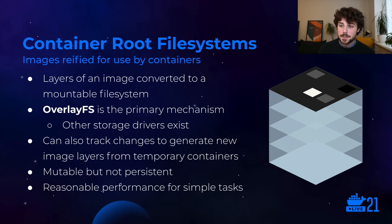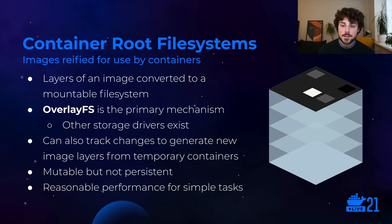Container root file systems are layered images that have been converted into a real, mountable, kernel-level file system. There are a couple of different mechanisms for doing this — OverlayFS is the one that Docker Desktop uses, and it's totally fine for most use cases. One of the roles of these storage drivers is to track changes and generate new image layers from those changes — that's actually how image building works. You create a temporary container with the root file system set to the base image, perform whatever changes you need by running commands, and then snapshot that to create a new image layer. There's a duality between container root file systems and images that supports this really efficient method of distributing container images.